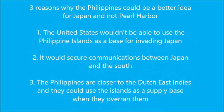Today I have chosen to change Emperor Hirohito's decision to attack Pearl Harbor. Originally he decided that Pearl Harbor was the best place to weaken the United States forces, even though his brother and most of his generals urged against it. Now he will agree with his brother and generals and want to attack the Philippines instead. Three reasons why the Philippines would be a better idea for Japan: one, the United States wouldn't be able to use the Philippine Islands as a base for invading Japan; two, it would secure communication between Japan and the South; three, the Philippines are closer to the Dutch East Indies and they could use the islands as a supply base when they overran them.